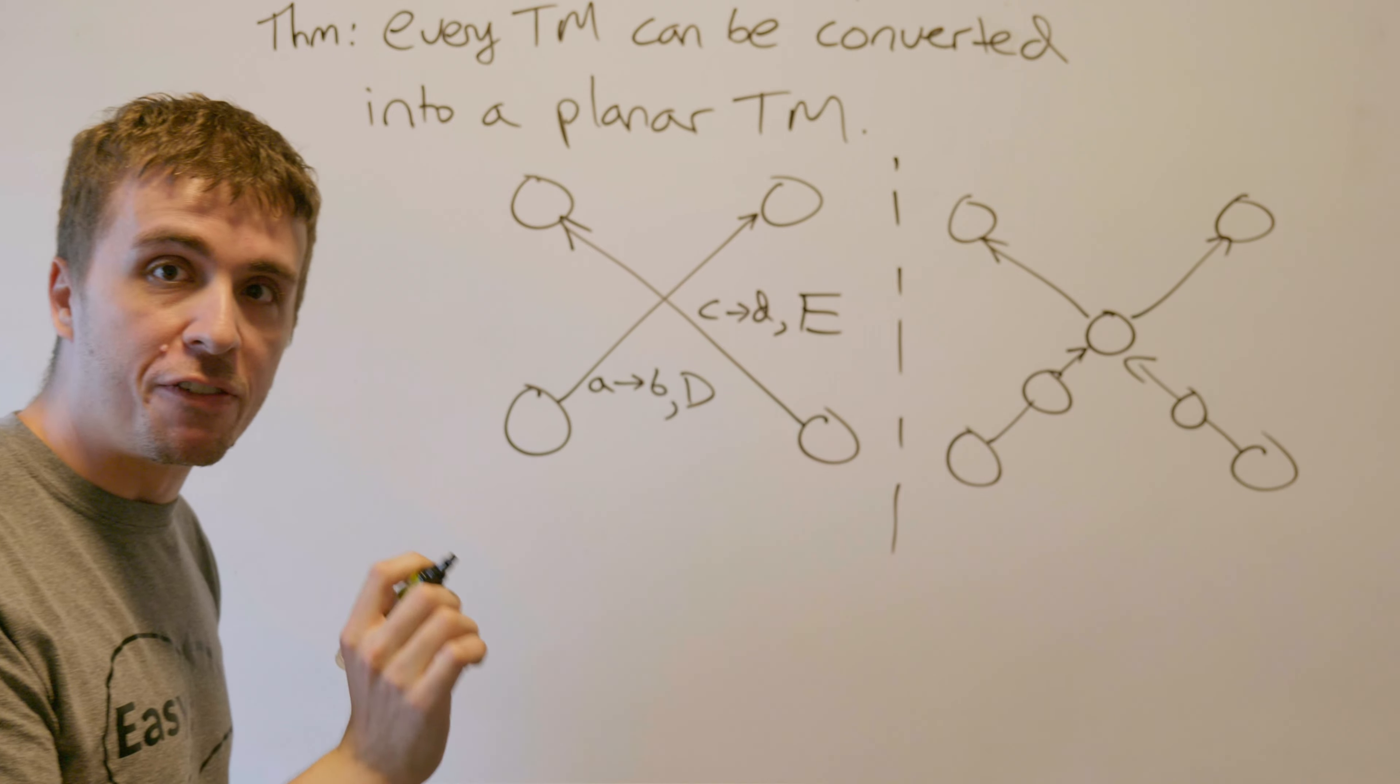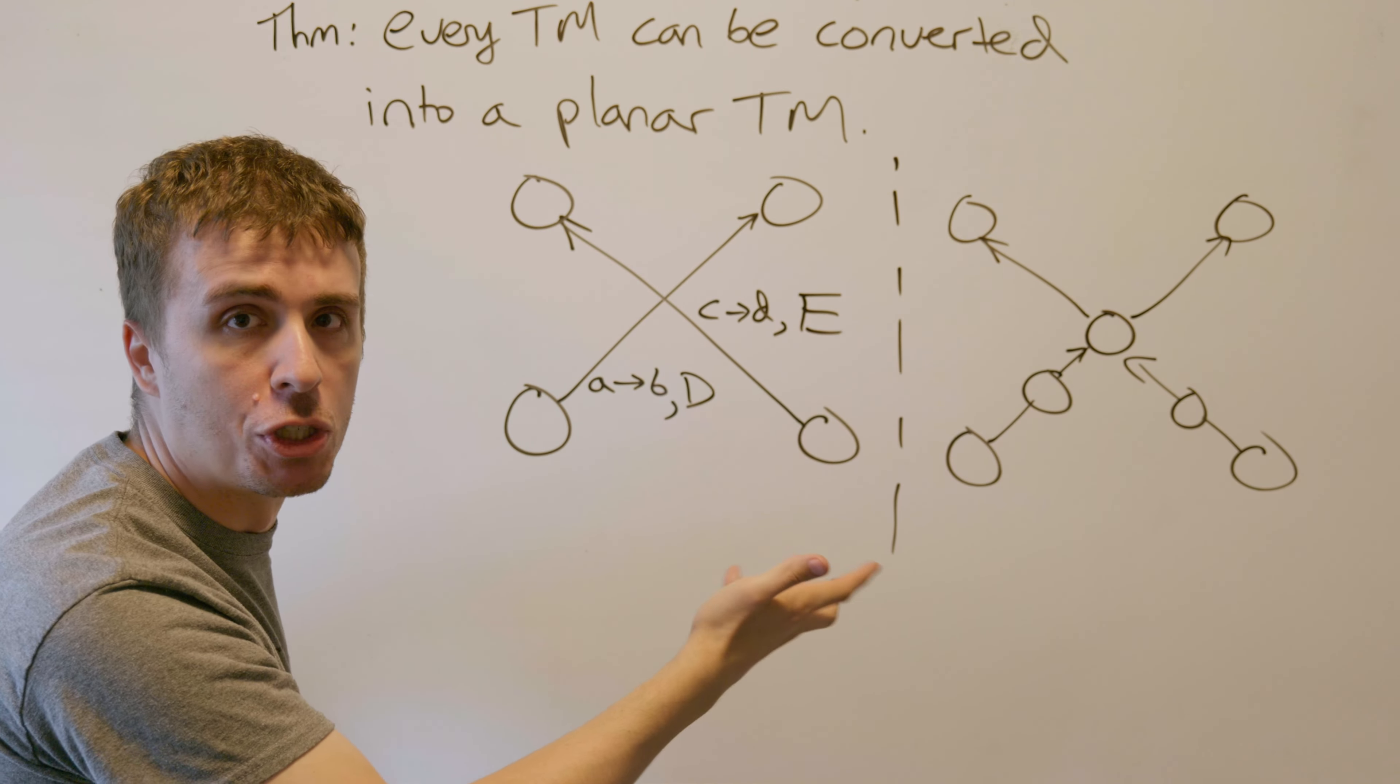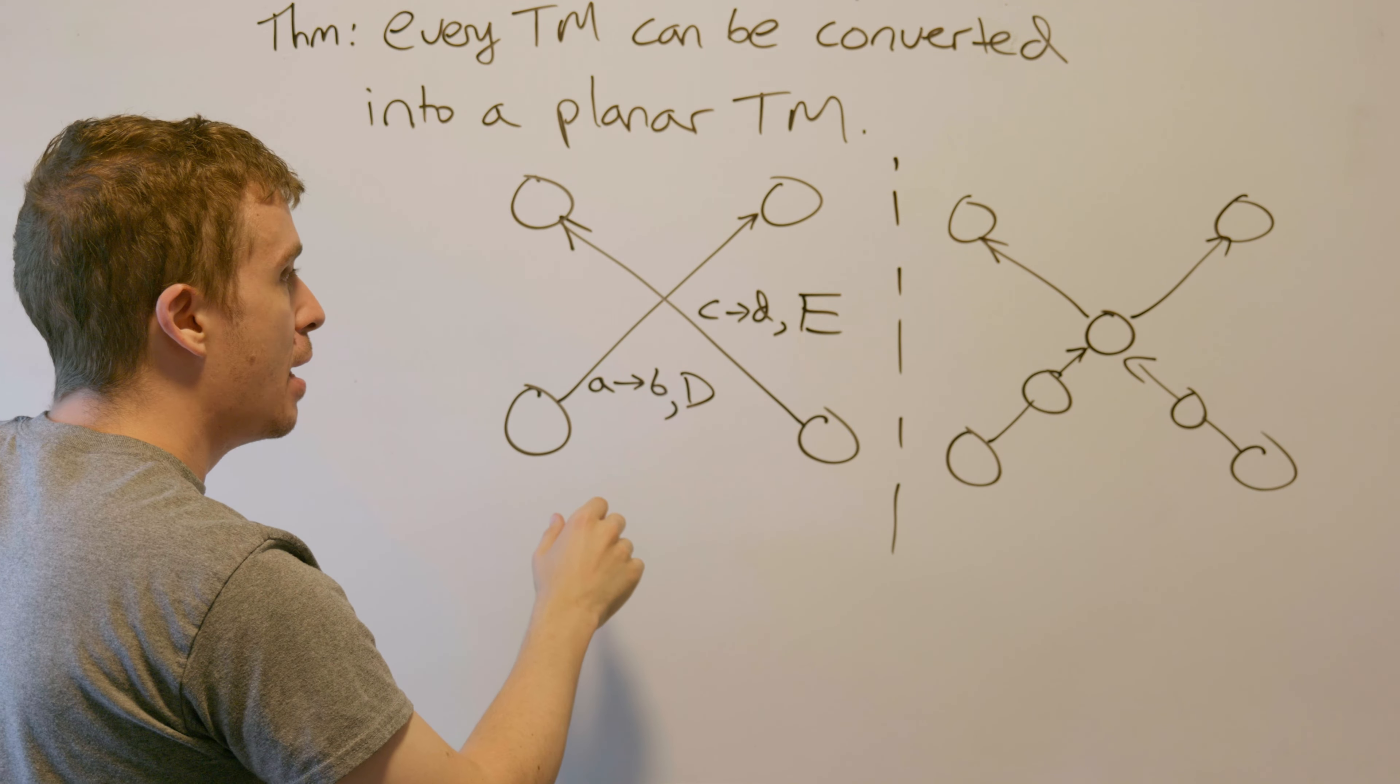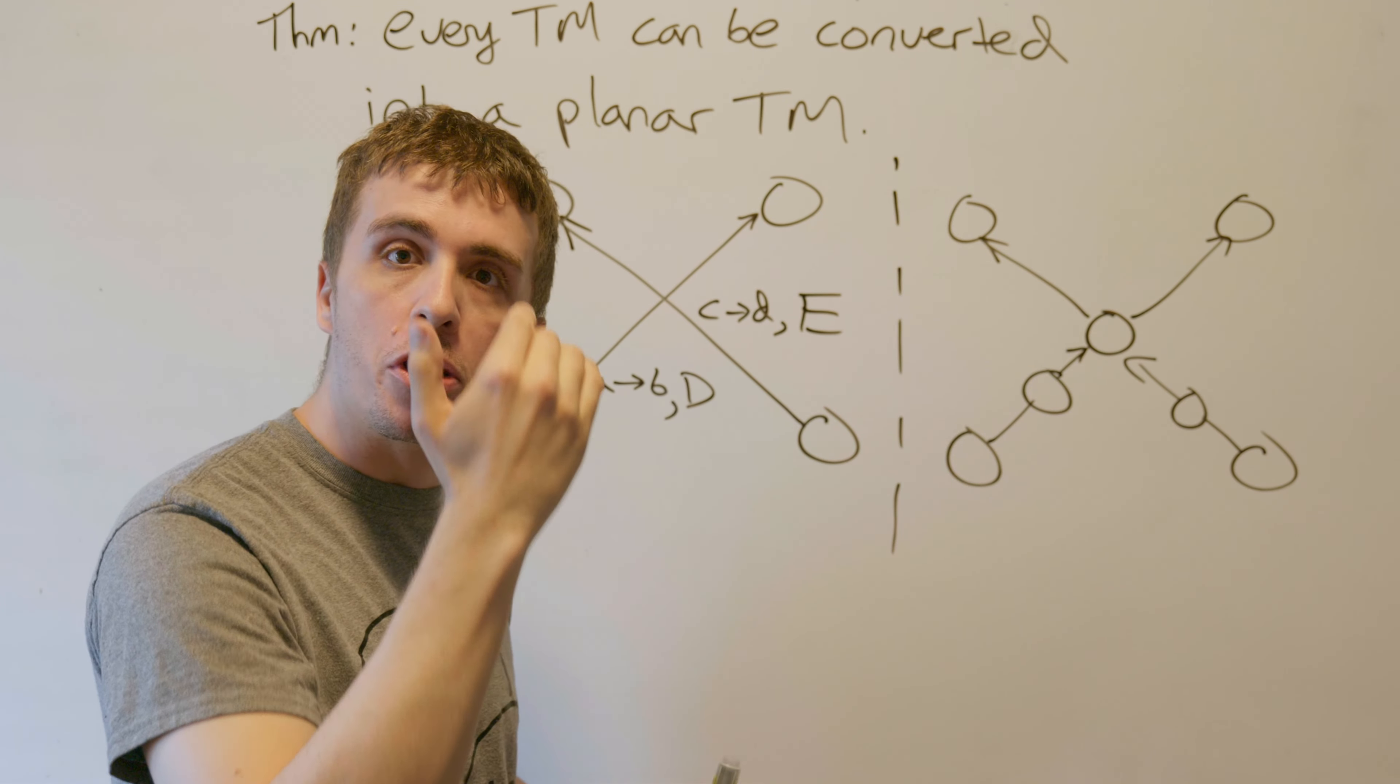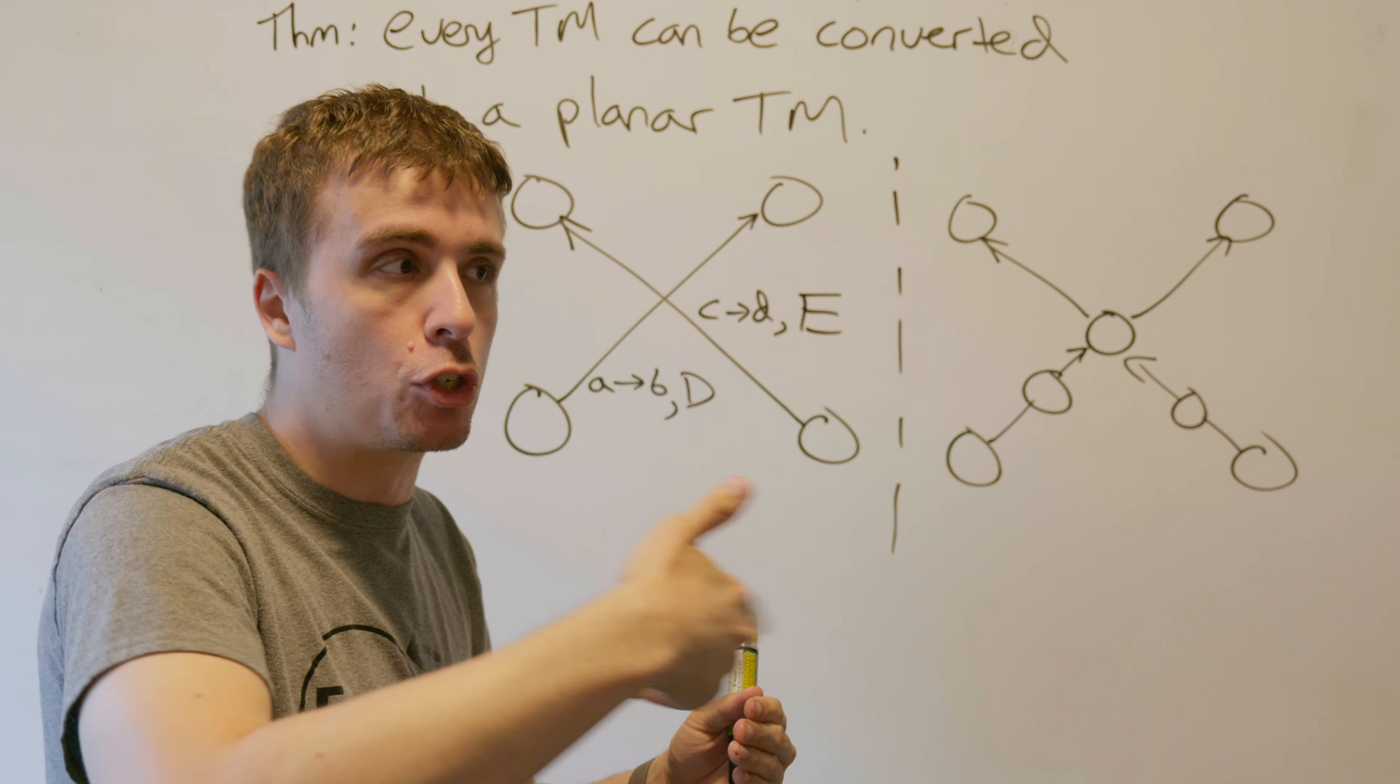Here's how we're going to fix this. Right here, we're supposed to read an A and change it to a B, and of course move that direction D. Then that means once we get to here, we need to have changed that cell, whatever it is, to a B and then moved whichever direction it is.